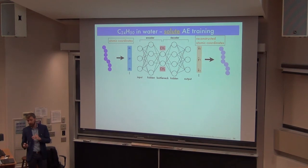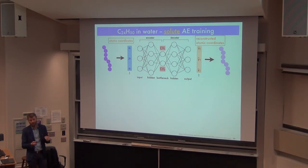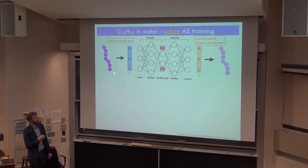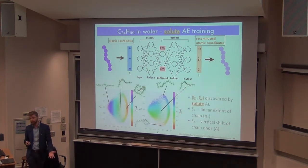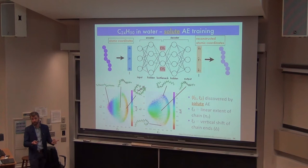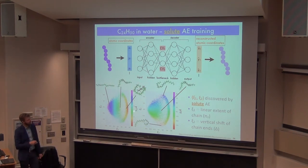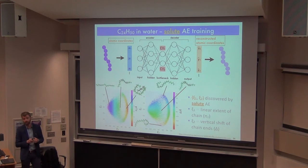We ask what happens if we learn only over the solute carbon atom coordinates, as we did for alanine dipeptide. The autoencoder gives a two-dimensional latent space. The first and second collective variables describe the chain configuration, and we color the embedded data points by the first principal moment of the gyration tensor — which tells you how extended the chain is — with the all-trans extended chain at one end of the manifold.